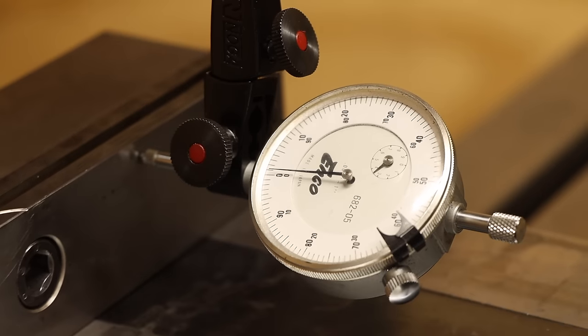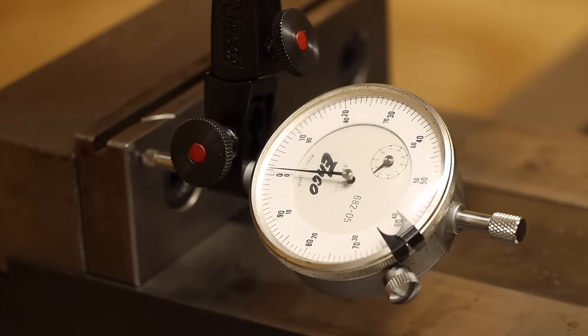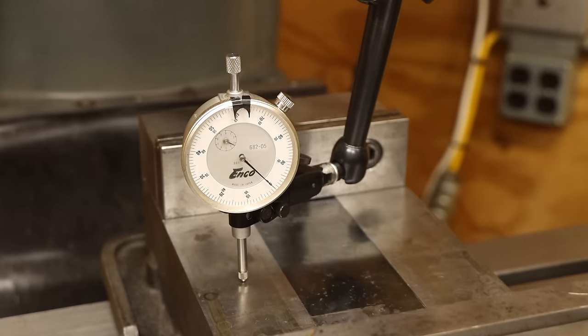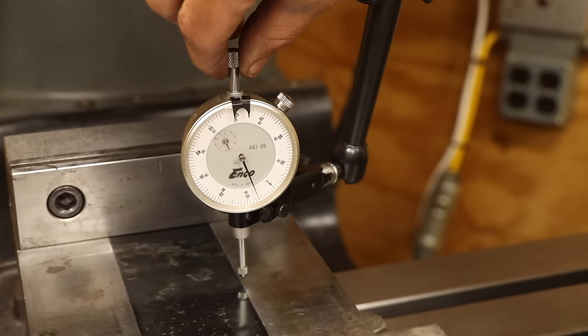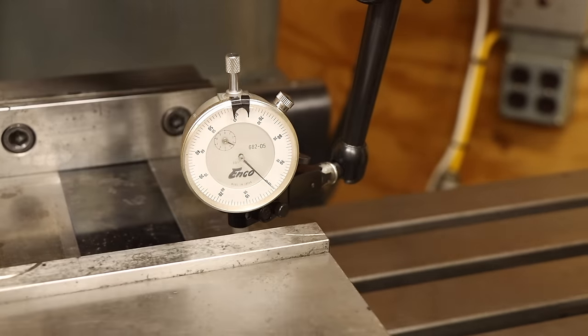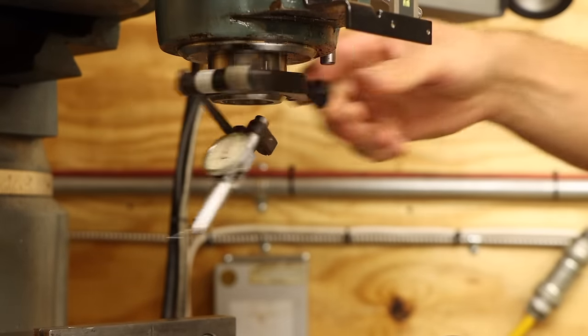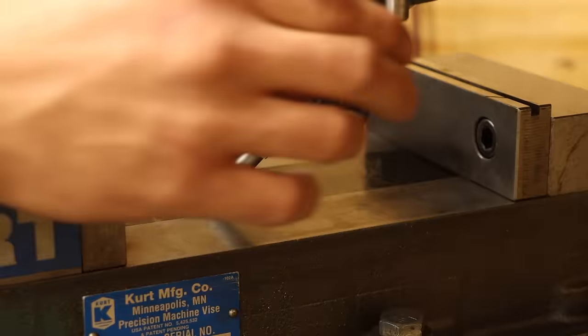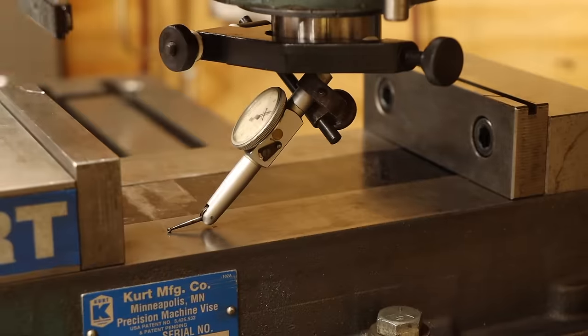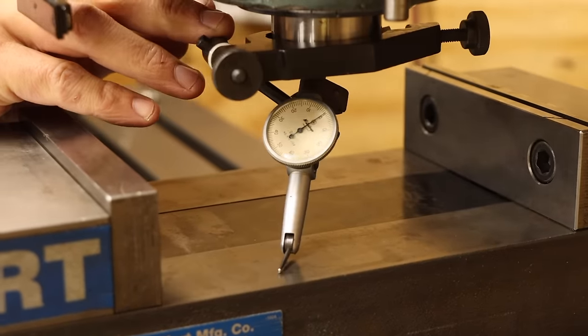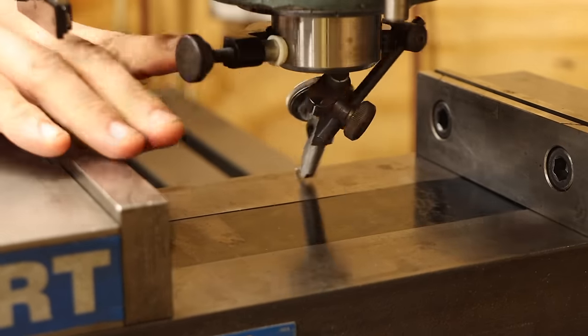Now of course I have to tram the vise to the mill, so I'll indicate that in before cinching it down. And for good measure, check that the vise faces are parallel to the x and y axes of the mill. While I haven't adjusted the mill head off vertical recently, it never hurts to check this alignment as well. So I'll mount my trusty tenths indicator in the spindle and sweep it around on the vise surfaces. And luckily no adjustment is needed.